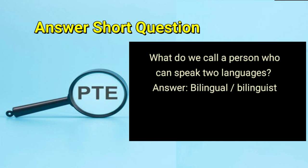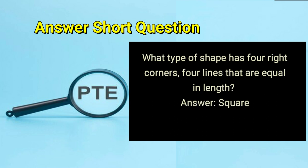What do we call the person who can speak two languages? Answer: bilingual or bilingualist. What type of shape has four right corners and four lines that are equal in length? Answer: square.